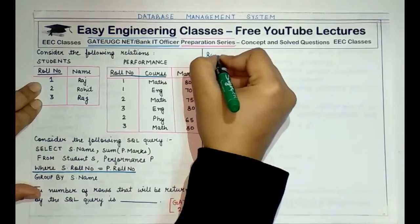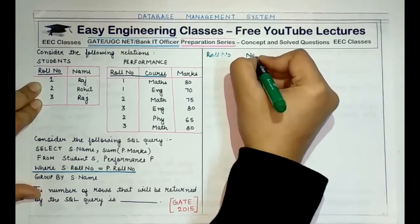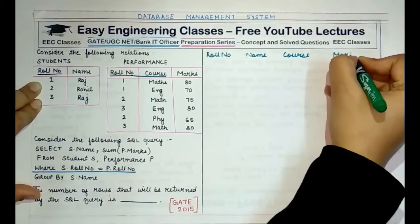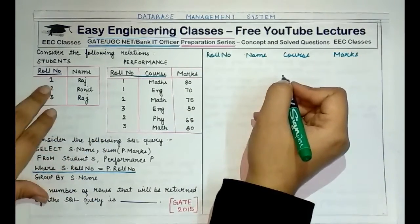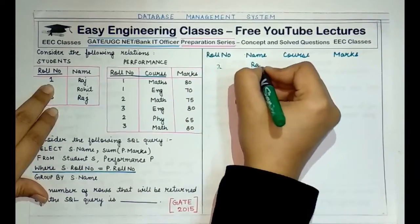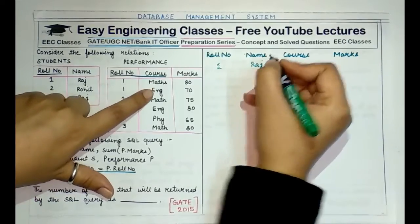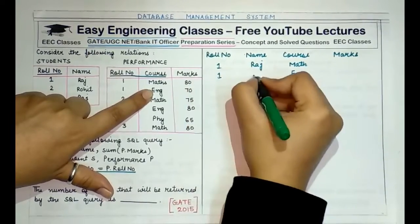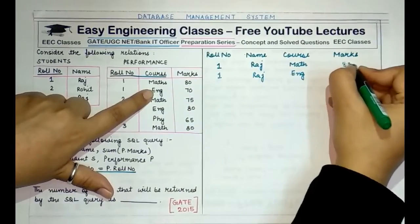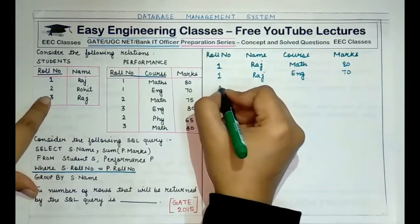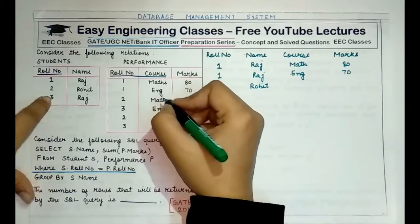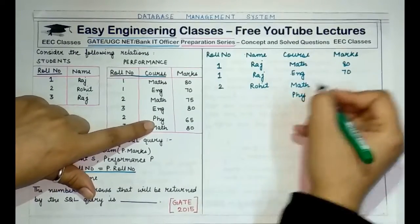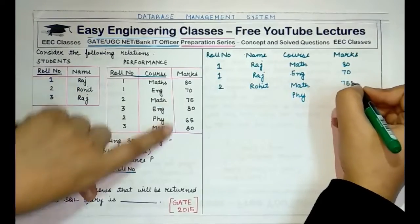The intermediate table would have columns: role number, name, course, and marks. We match values from both tables based on role number. For role number 1, the name is Raj, who has taken Maths and English as courses.